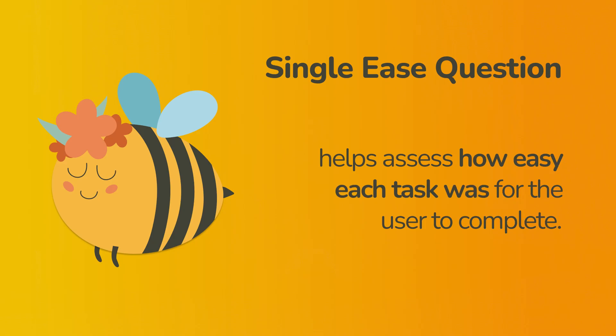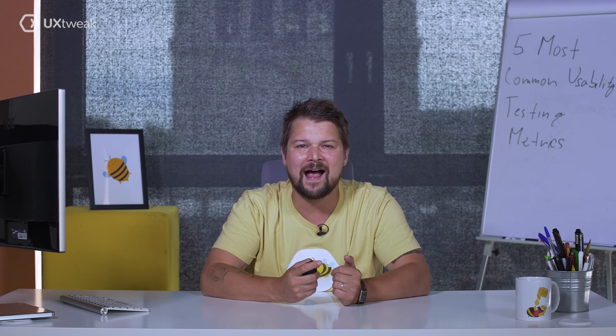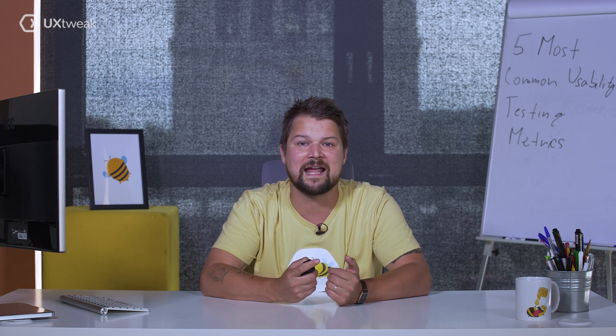The Single Ease Question helps assess how easy each task was for the user to complete. After each task, ask the participant how difficult or easy it was to complete. The user then rates their answer on a scale from one to seven, where one stands for very difficult and seven for very easy. The average Single Ease Question score is around 5.5.